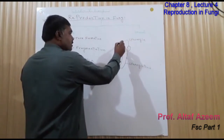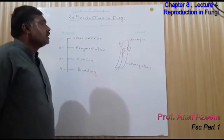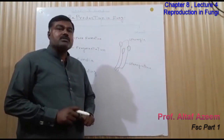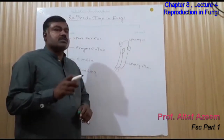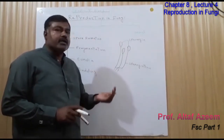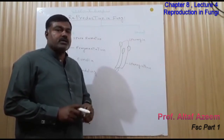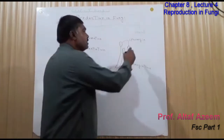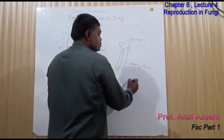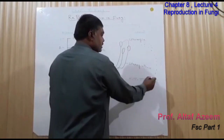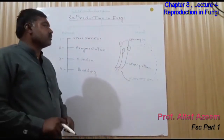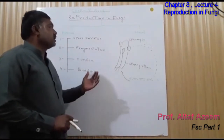When these spores become mature, the wall of the sporangia bursts. When the sporangia mature, their wall breaks and the spores are dispersed through different sources such as wind, insects, and rain splash. When the spores find a proper substratum, they germinate to produce a new fungal body. This process is known as spore formation.